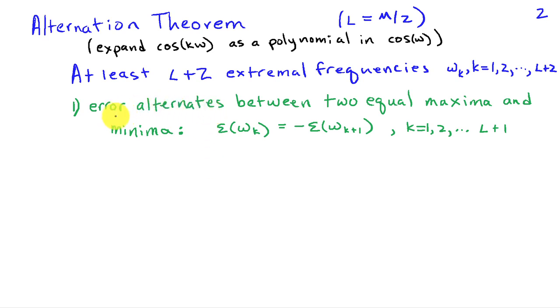First of all, the error alternates between 2 equal maxima and minima. So if I look at the error at one extremal frequency, I have epsilon of omega K, and then at the next one, I have the same magnitude but a change of sign. So the error alternates between successive extremal frequencies.